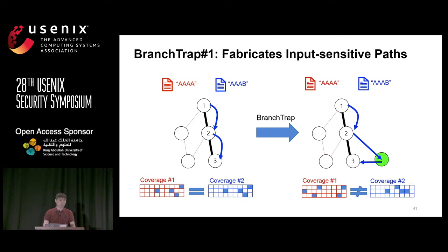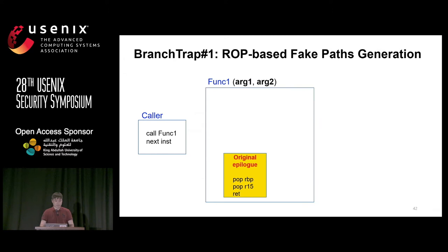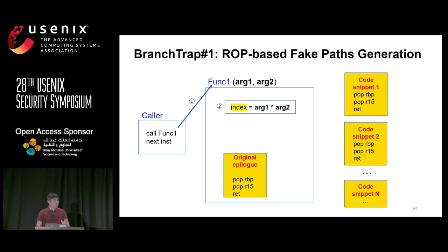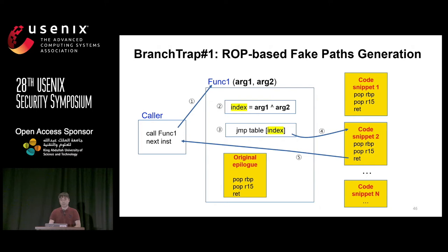We took the idea of fake paths from return-oriented programming. There is a function without epilogue instructions. We identify all same instructions for code snippets across the binary — n copies of the same code snippet. When a function is invoked, we calculate an index value using the actual argument. Using the index value we make a jump — in this example, jumping to the second code snippet and then back to the original instruction. This is effective because whenever data changes, the argument value changes, meaning data changes affect control flow.